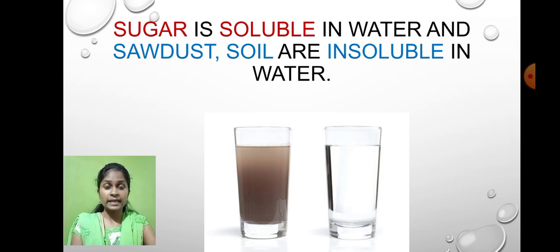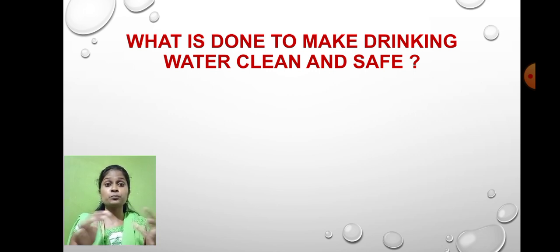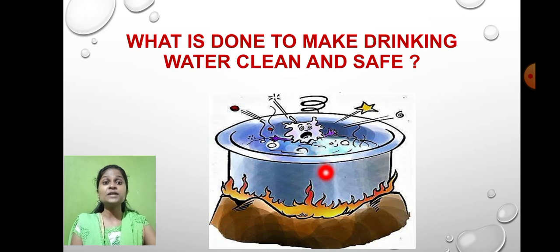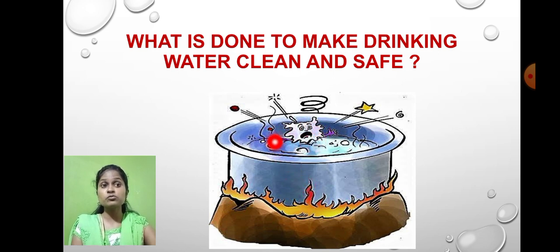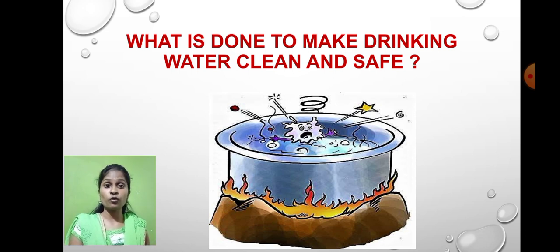During the rainy season, we often get muddy water. Can we drink such water? If we want to clean it, what can we do? At home, first we can boil the water — boiling kills whatever germs and microorganisms are present, making it safe for consumption. If a filter is available at home, we can also filter the water to make it safe.